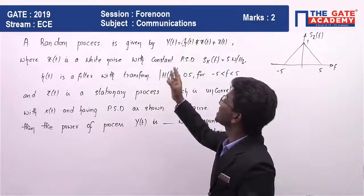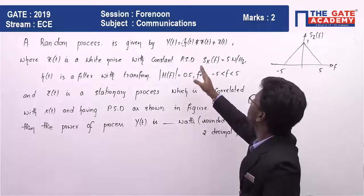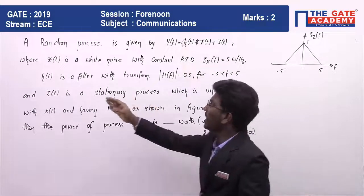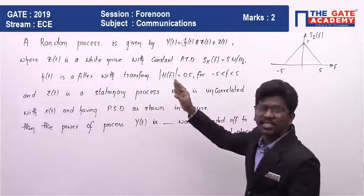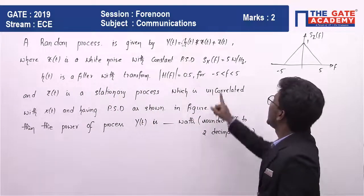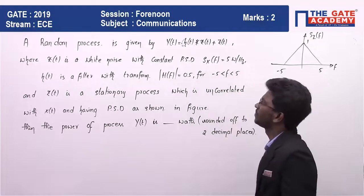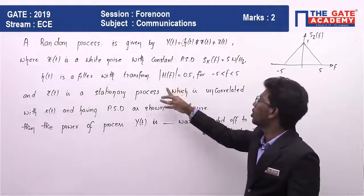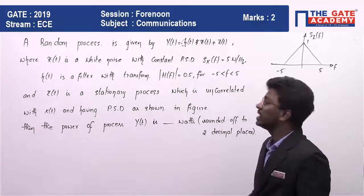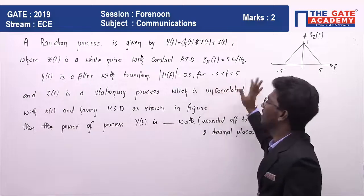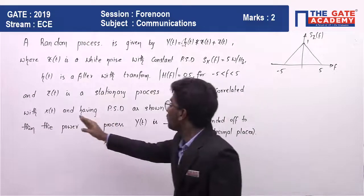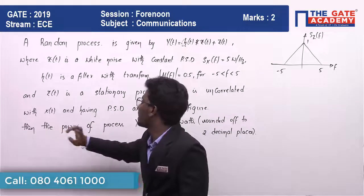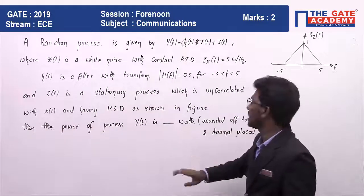A random process is given by y(t) equal to h(t) convolved with x(t) plus z(t), where x(t) is white noise with constant power spectral density Sx(f) equal to 5 watts per Hz, and h(t) is a filter having transform modulus |H(f)| equal to 0.5 for -5 less than f less than 5.